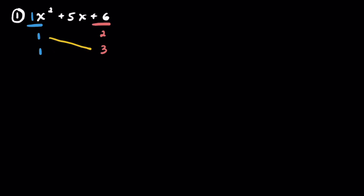You can also go diagonal. It doesn't matter right now because you have 1 and 1, but later on when the values differ, it does matter. So for the first 50 examples, it's not going to matter, but later on it does. We'll try to get in the right mindset of how we go about doing these. I'm going to pair these up across just to keep things consistent.